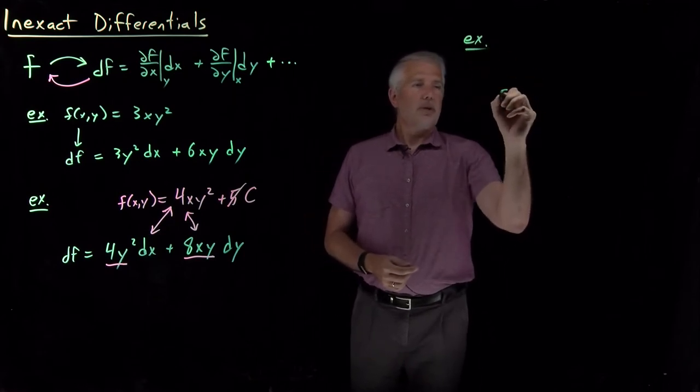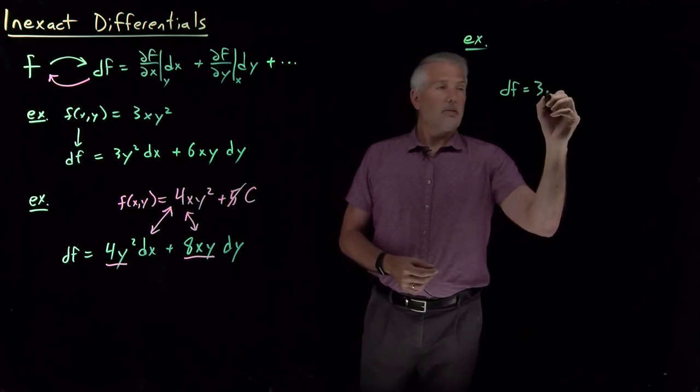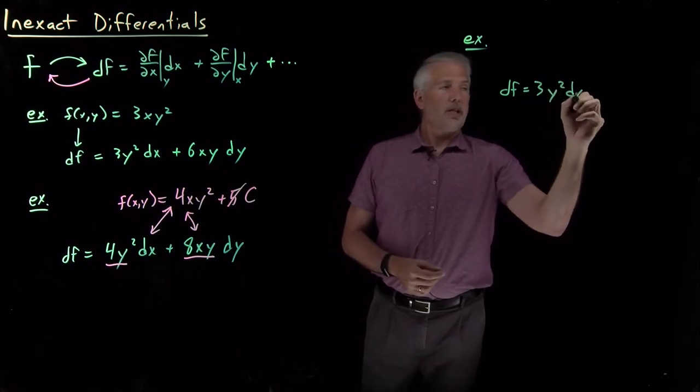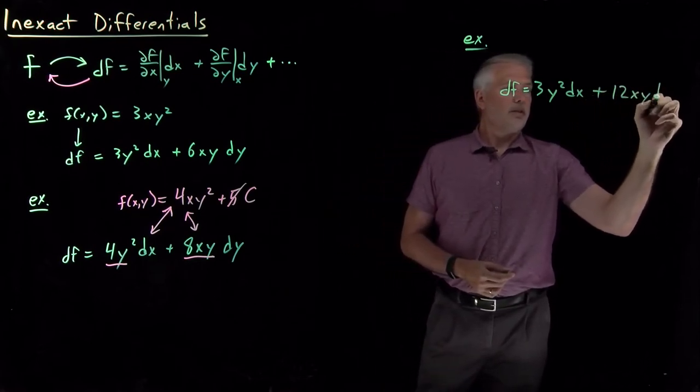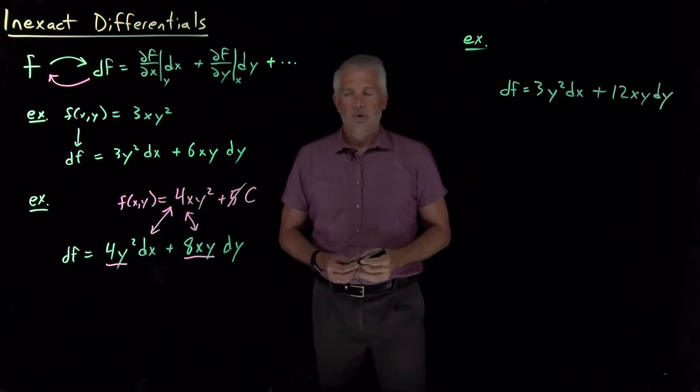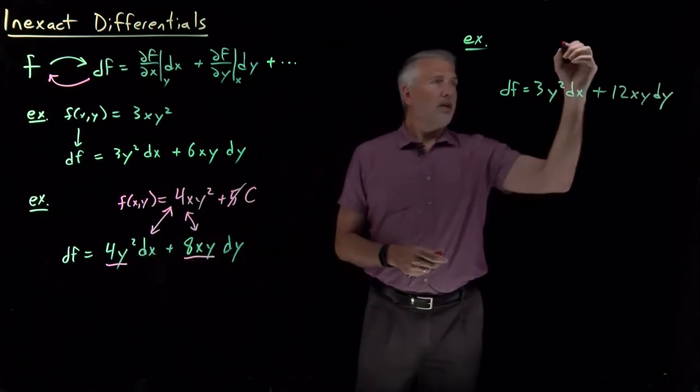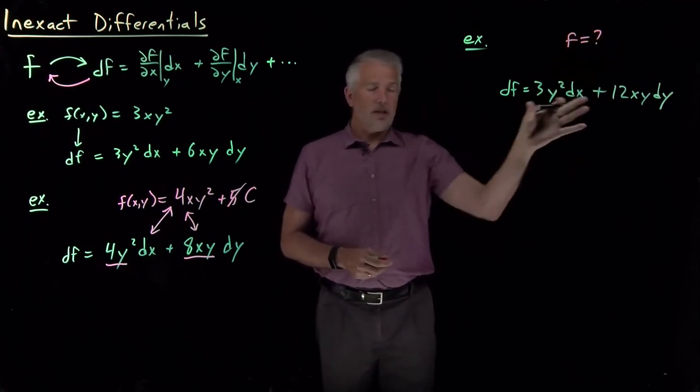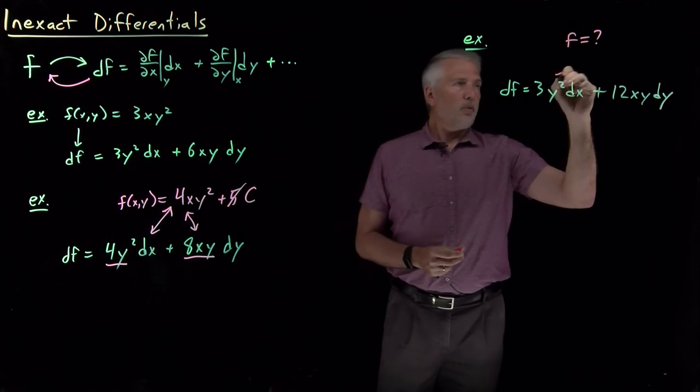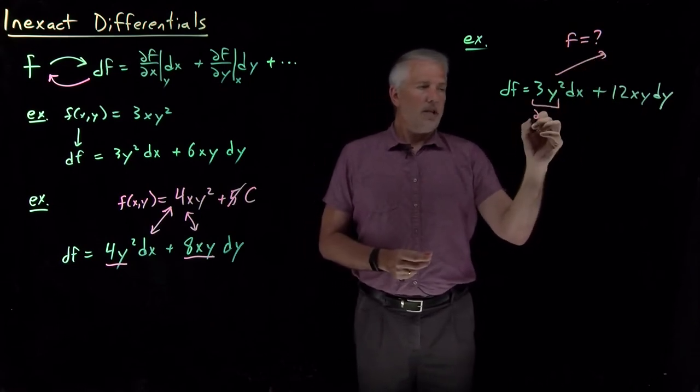Suppose we have a differential that looks like, I'll make it look similar, 3y² dx, and let's say 12xy dy. So far, so good. It sounds like we just want to do this same procedure again. If we want to figure out what the function is that gives rise to this differential, if we work backwards from this piece, if this is df/dx.